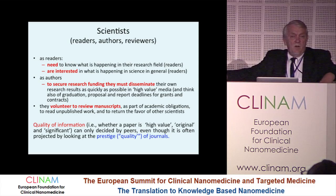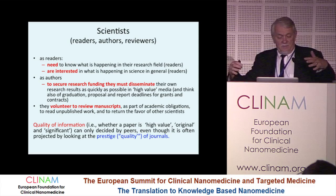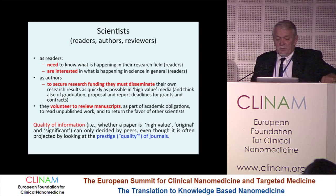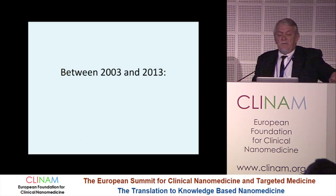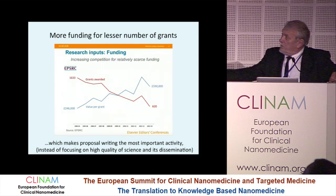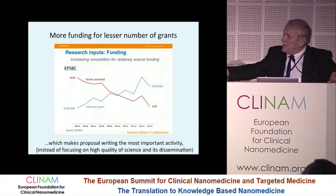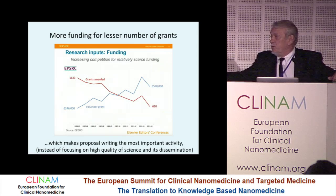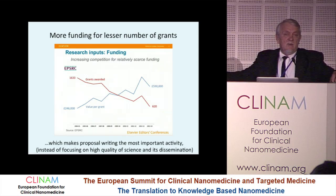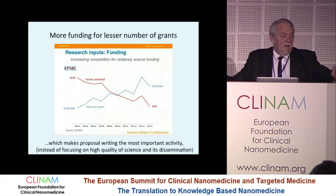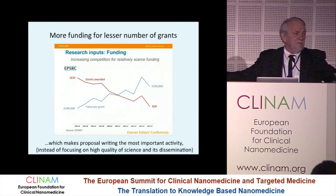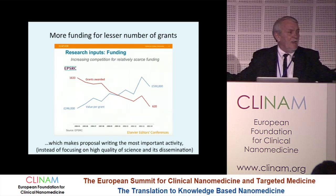Between 2003 and 2013, more funding became available for a lesser number of grants — this is EPSRC data, but the general data show the same trend — which makes grant writing the most important activity instead of working on science. It happens very often that PIs are writing proposals, writing grants, writing reports, and then the student writes the paper. The professor looks at it, sends it in, and it comes back with a review. Does that sound familiar?